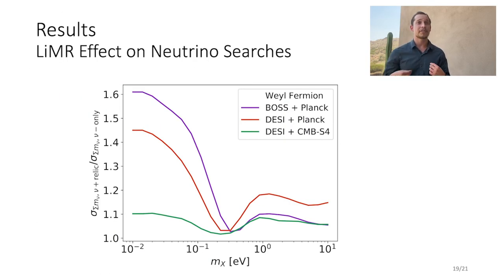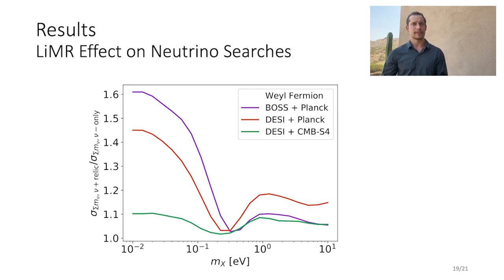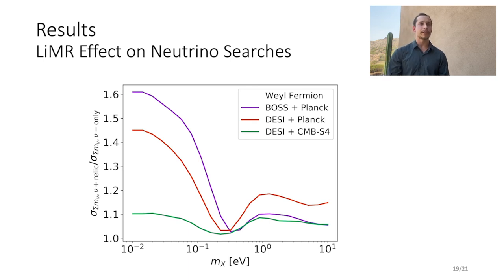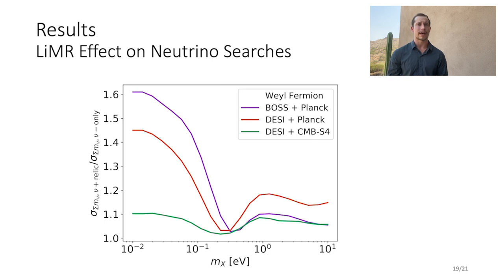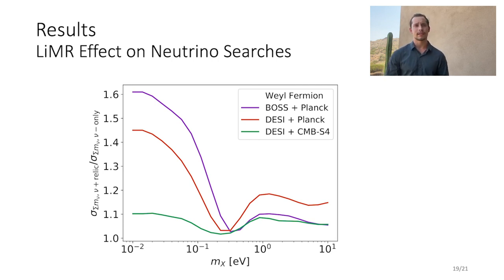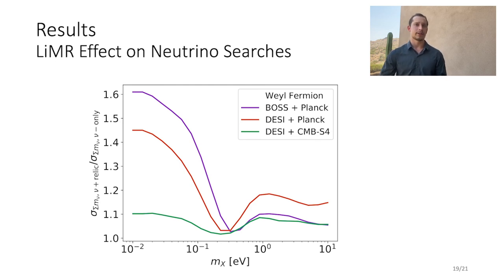Our final result concerning LEMURs concerns the effect that having the sum of neutrino masses as a parameter in our model has on our results, and vice versa. In general, we find that if the sum of neutrino masses can be learned independently from cosmology — say by particle experiments — it will improve the constraints on LEMURs by roughly 20 percent. By contrast, the presence of a LEMUR in the cosmology has a significant effect on how well the sum of neutrino masses is constrained, with degradation ranging from about 10 percent for heavy relics and futuristic datasets to over 60 percent for lower masses and current datasets.